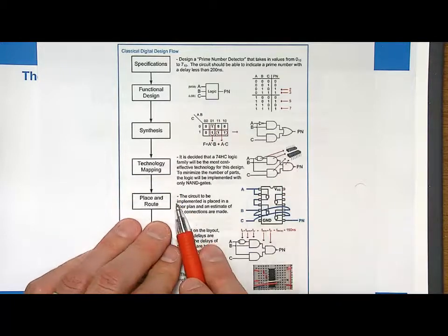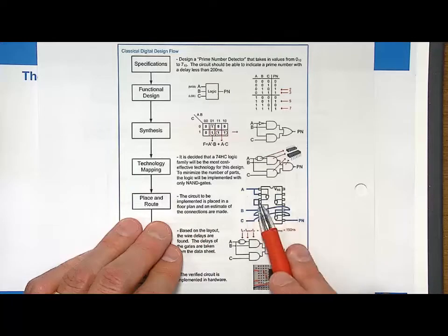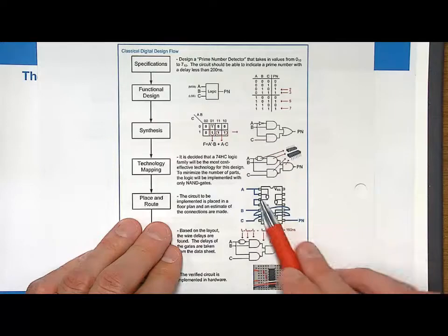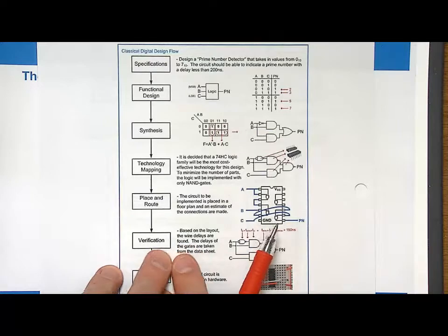Then we place and route it. This is where we position the chip wherever we're going to have it in our system and we wire it up. In this situation we could do it with one chip and we do all this wiring. These are where the inputs come in, this is where the outputs come in.